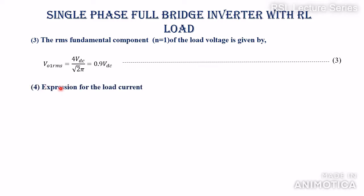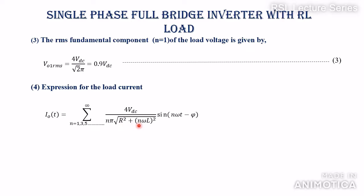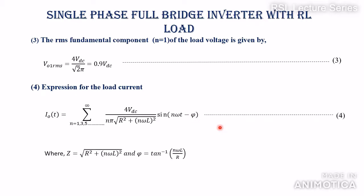The Fourier series expression for the output current I0(t) is given by V0/Z, where Z is the series RL impedance: Z = √(R² + (nωL)²). The current expression includes a sin(nωt − φ) term, where the negative sign indicates that current lags voltage by angle φ in the inductive circuit. The impedance is Z = √(R² + (nωL)²) and the phase angle is φ = tan⁻¹(nωL / R).